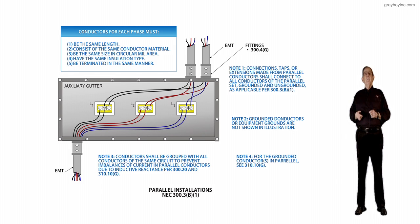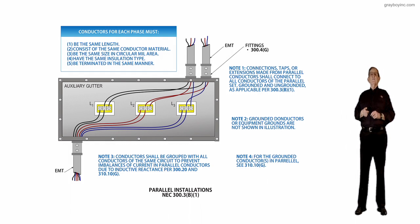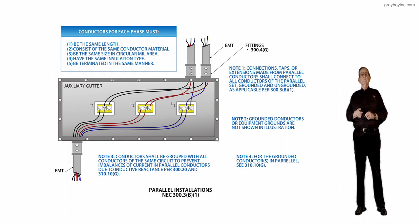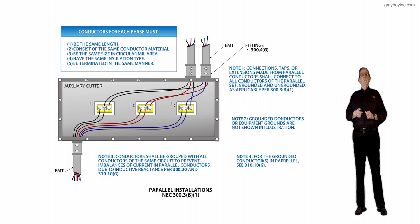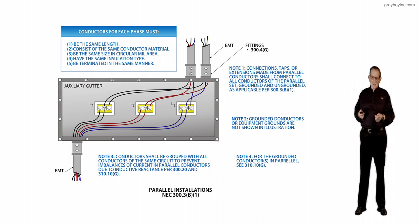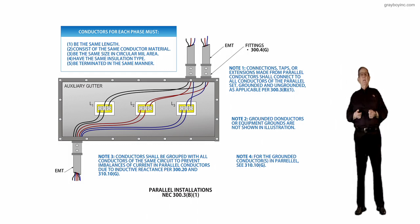In the boxed-in information, you have one through five listed items that must be complied with: be the same conductor length, consist of the same conductor material, be the same size and circular mill area, have the same installation type, and be terminated in the same manner.